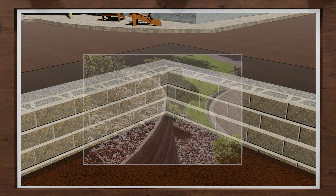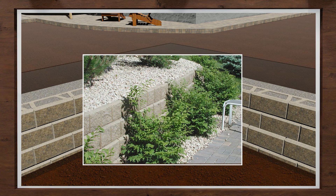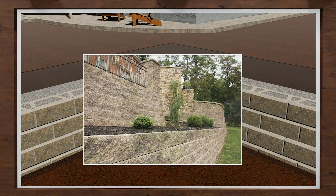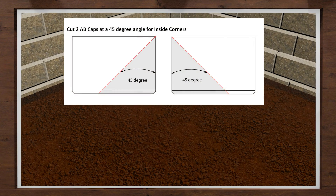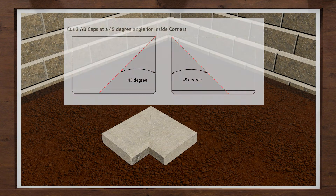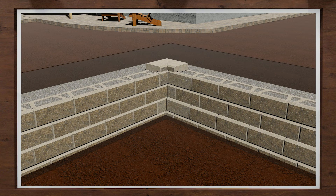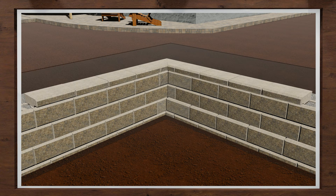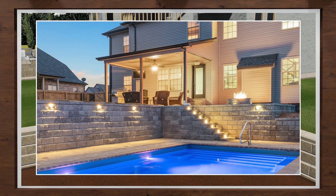At the top of the wall you can use mulch, rock, pavers or soil to finish using the raised front lip as an edge. You can also cap your wall with AB capstones. You will need to modify two AB caps by cutting them at a 45 degree angle, then placing them on top of the wall at the corner. Install additional caps down the walls using a high strength construction adhesive to secure all caps in place.